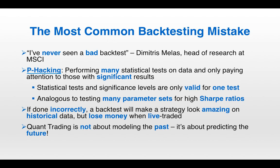Overfitting is far and away the most common backtesting mistake. Dimitris Melas, head of research at MSCI, said 'I've never seen a bad backtest.' A lot of times when you're overfitting in quant trading, what you're really doing is p-hacking. P-hacking is when you perform many statistical tests on data but only pay attention to those with significant results. Statistical tests and significance levels are only valid if you're doing one test. The alpha equals 0.05 significance level means we view results as significant if the probability of those results occurring by random chance is less than 5%. But if you do 100 experiments, it's almost a statistical certainty that some will end up with p-values less than 0.05.